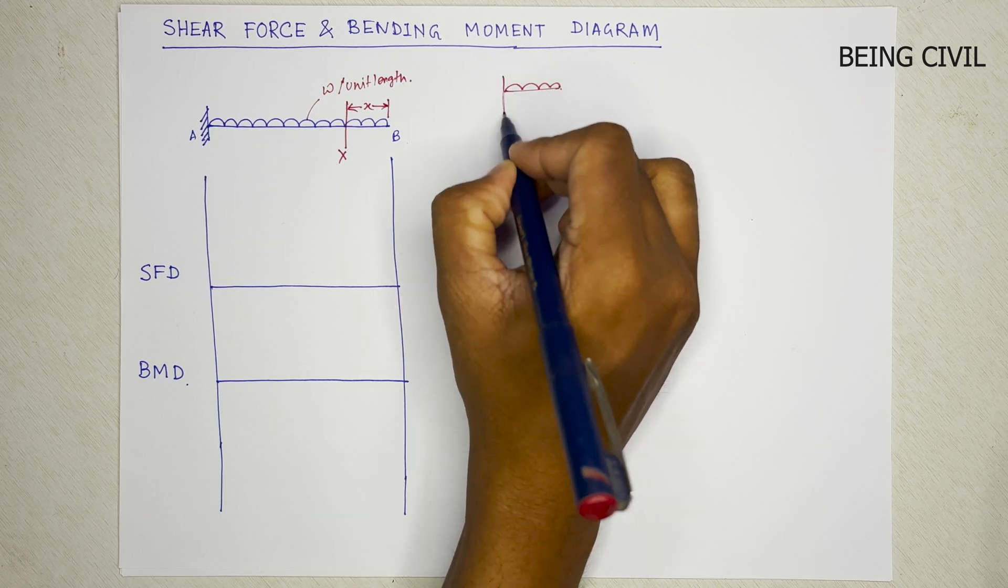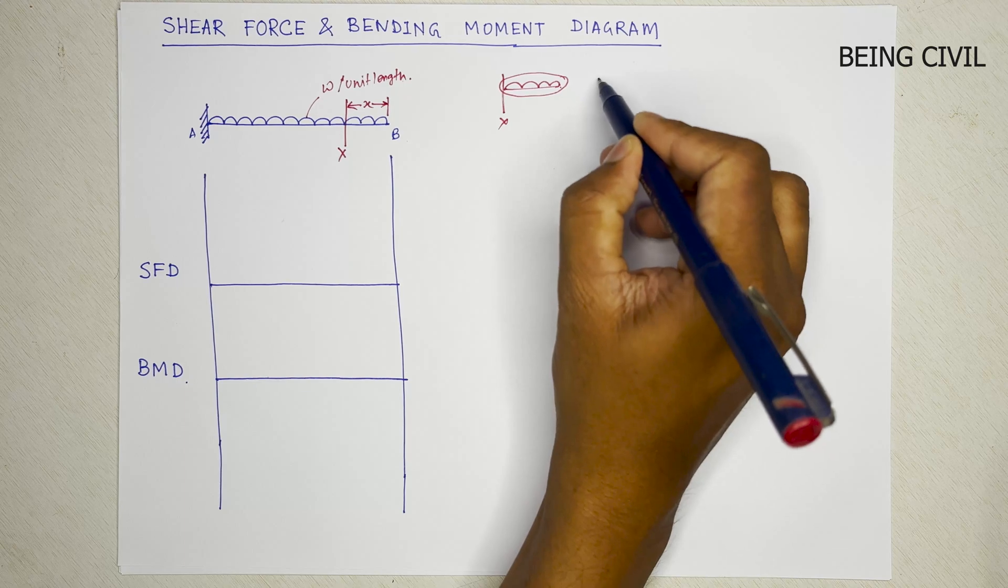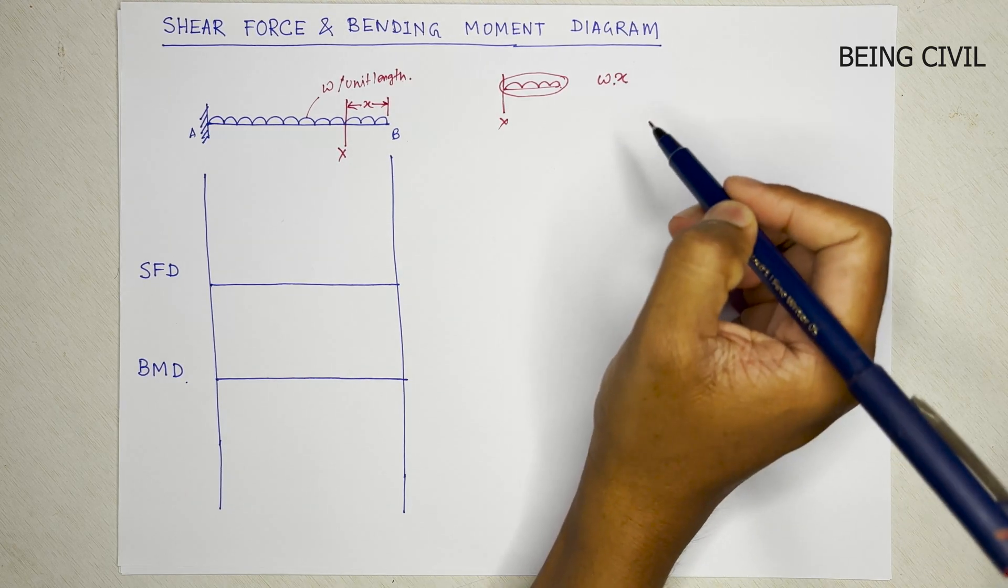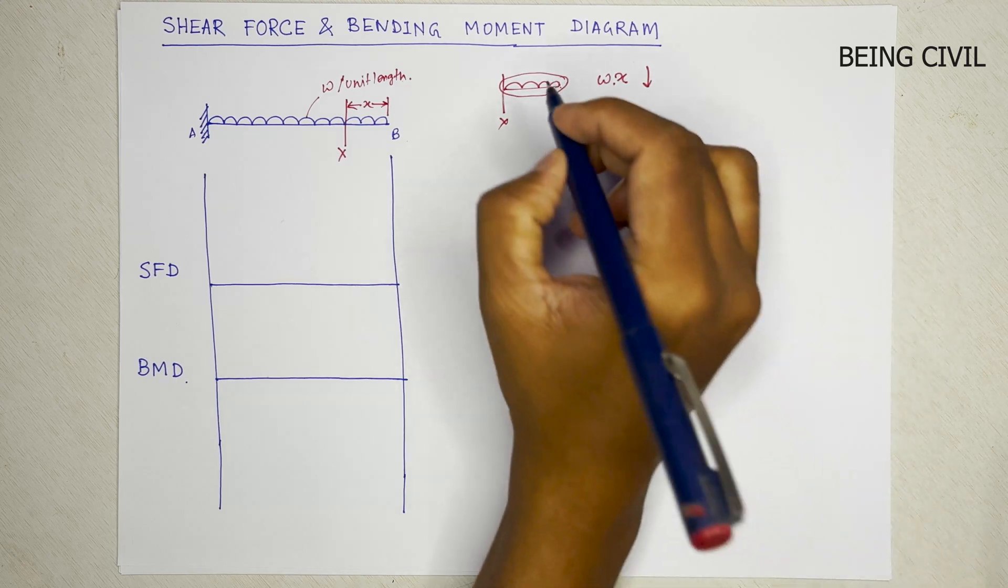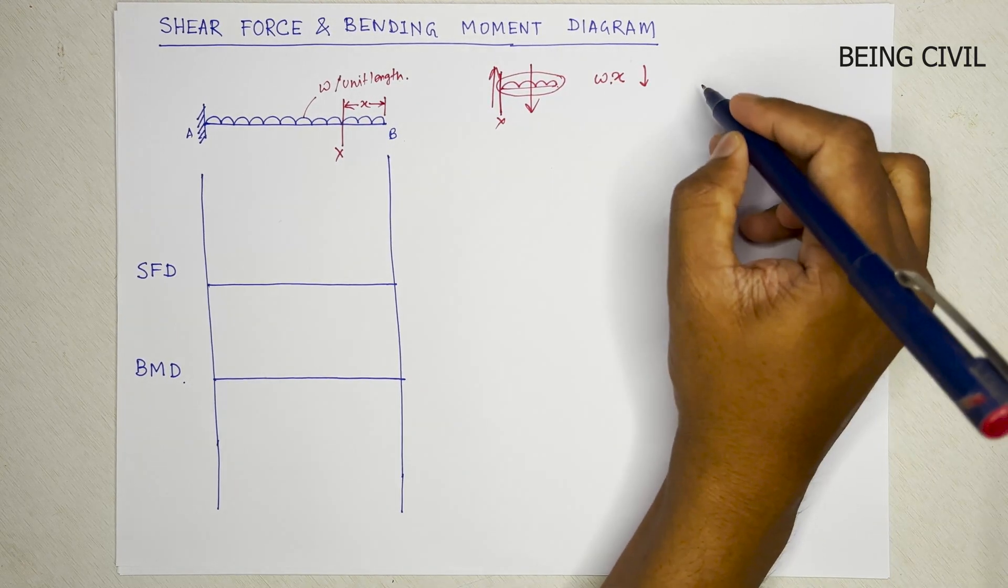Take this section X. The total load of this section is w into the distance, which is x, and it is downward in nature. So here it is downward, and at this section it will be upward. So our nature of the force is left up, right down.